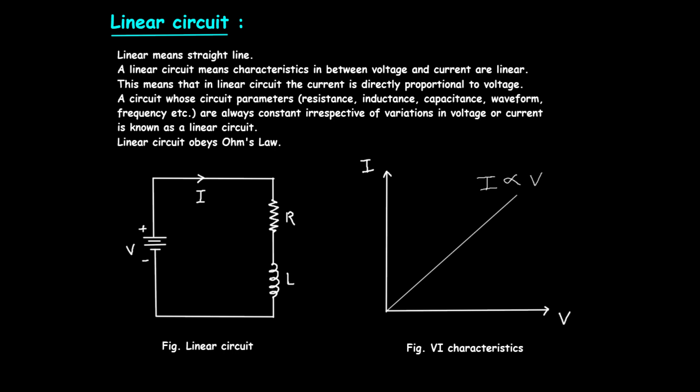3. Constant Parameters: The components of a linear circuit, such as resistance, R, inductance, L, and capacitance, C, remain constant regardless of changes in voltage or current. This consistency ensures that the circuit's behavior is predictable and linear.